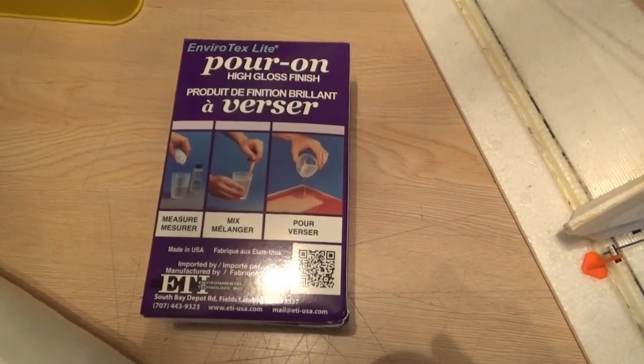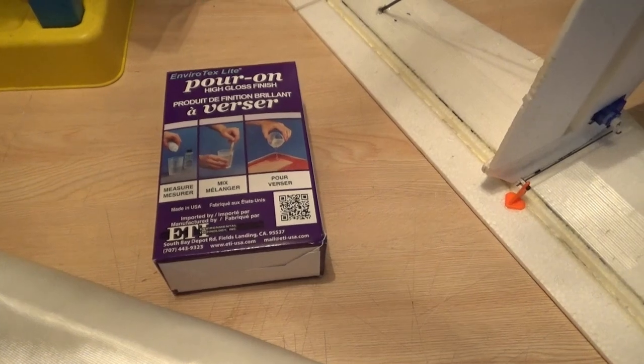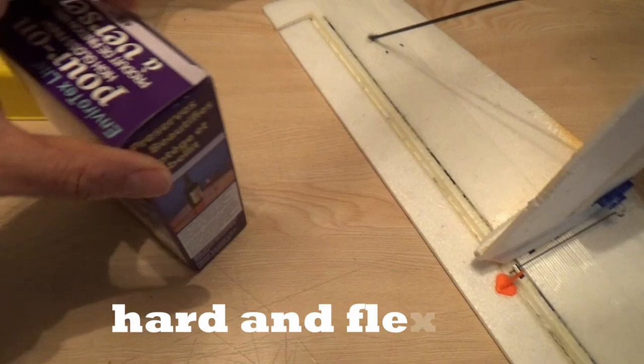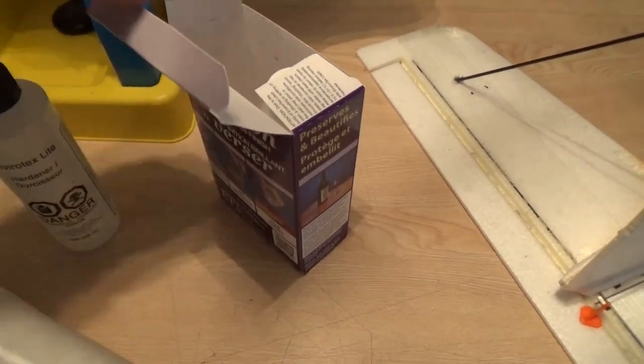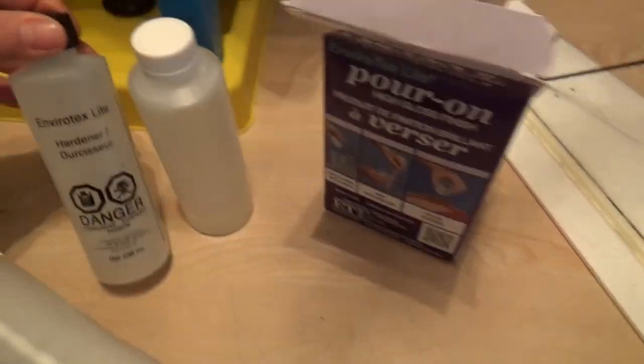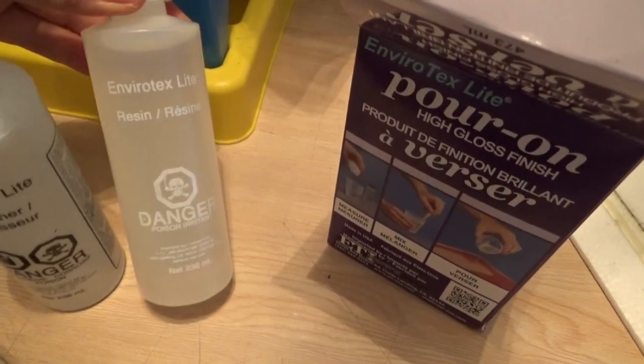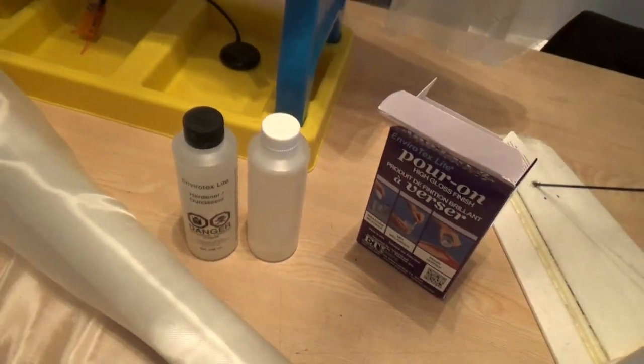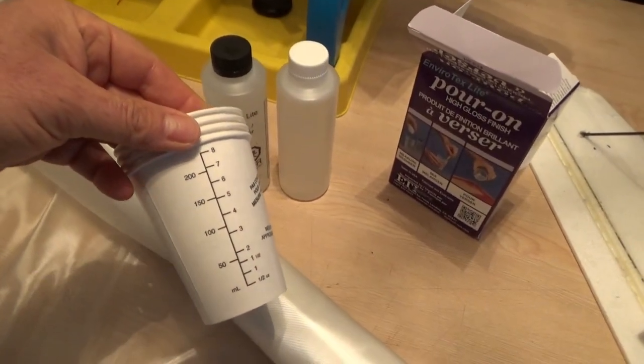We're going to use this epoxy. The guy from the store told me that this was perfect. Don't worry about the epoxy set, just worry about the way that it works. So you mix one part of each of these components. It's called Envirotex Light Hardener and this guy here is the resin.